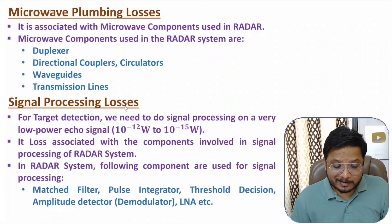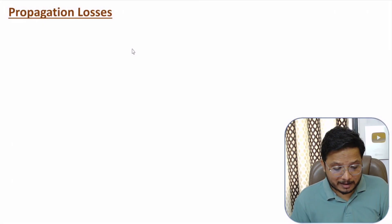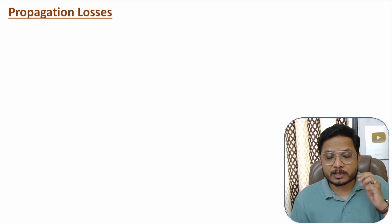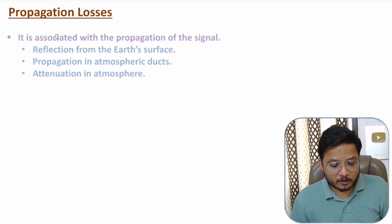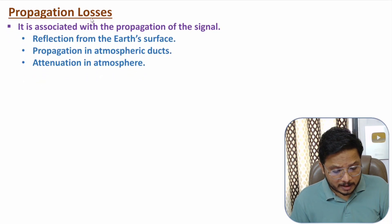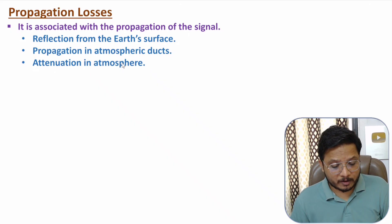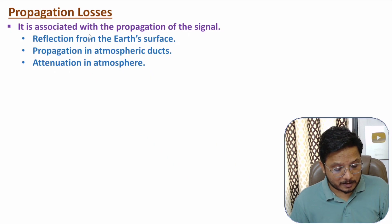Next is propagation loss. As the name suggests, it is based on signal propagation and includes losses from reflection off the earth's surface, propagation in atmospheric ducts, and attenuation in the atmosphere.